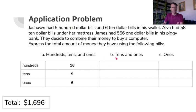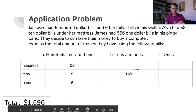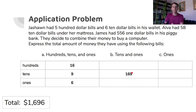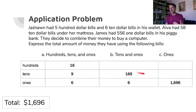Now look at the tens — where the nine is. Read this number out to the tens place: 169 — that's 169 tens. And how many ones? Six. If you were to take the whole amount — $1,696 in one-dollar bills — how many ones would that be? 1,696 ones. See: 1,696 = 1,696 ones = 169 tens = 16 hundreds. It's all the same amount of money; it's just how you look at it in terms of place value.